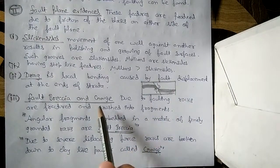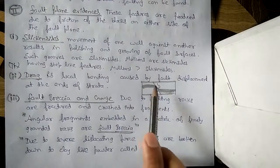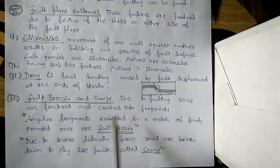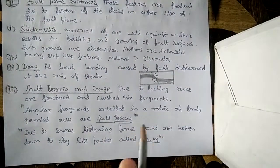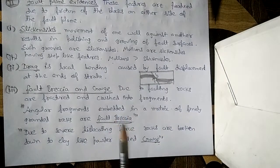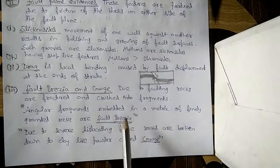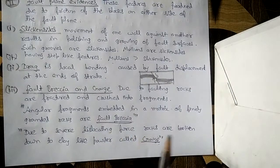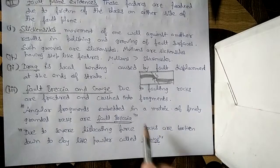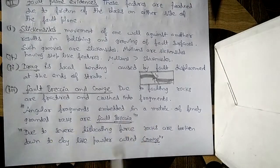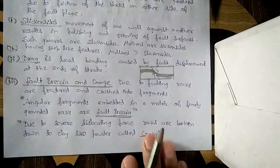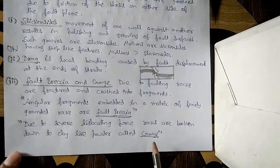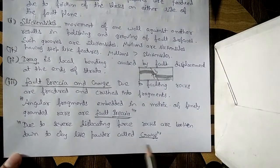The second fault plane evidence is drag — local bending caused by fault displacement at the ends of strata, where the strata are slightly bent. The third is fault breccia and gouge. Due to faulting, rocks are fractured and crushed. Fault breccia consists of angular fragments embedded in a matrix of finely ground rock. Due to severe dislocation forces, rocks are broken down into a clay-like powder called gouge.